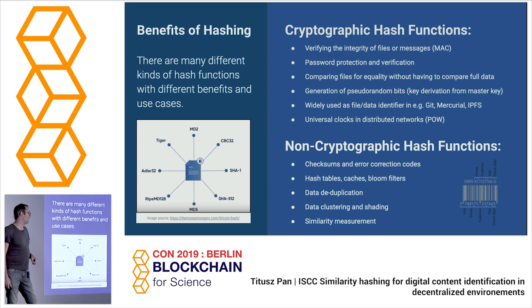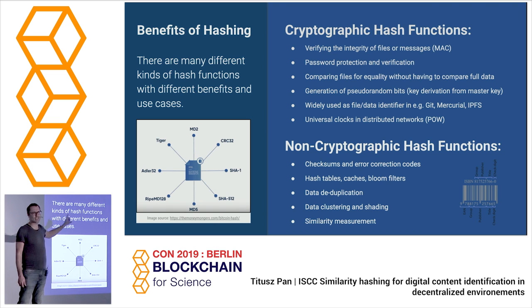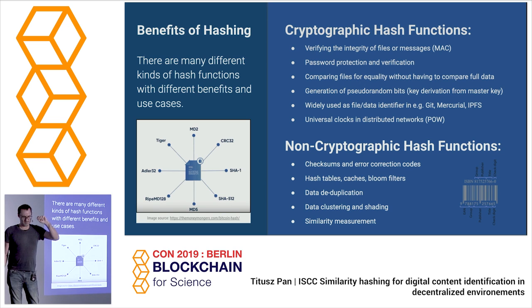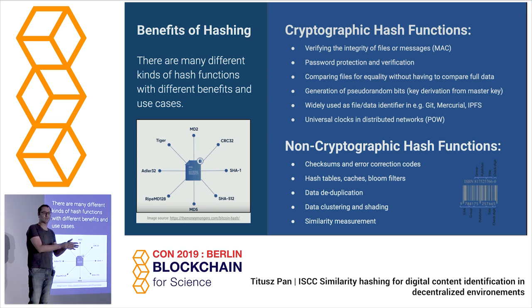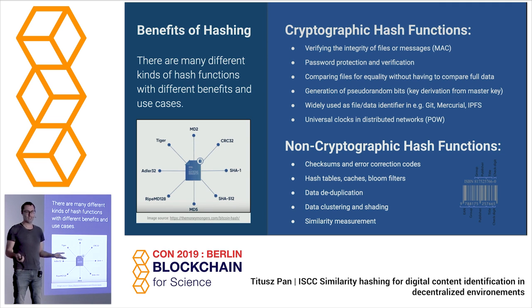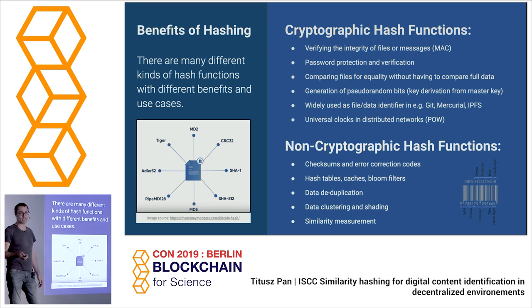We also have non-cryptographic hash functions, used like checksums, hash tables, for data deduplication and similarity measurement. There's a very big difference because cryptographic hash functions are correlation-resistant: if you change anything in the data, the hash you get is not correlated to the hash of the unchanged data. But we also have hash functions that do quite the opposite — they preserve similarity.